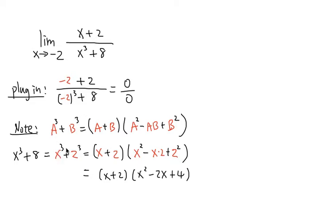Once again, I just plug in x into all the a's and then 2 into all the b's. And of course, we can rewrite this. This is going to be x plus 2 in the front. And then the second parenthesis is x squared minus x times 2 is like the same as 2 times x. So I'll write it down as 2x. 2 squared is just 4. So this is the factoring for x to the third power plus 8.